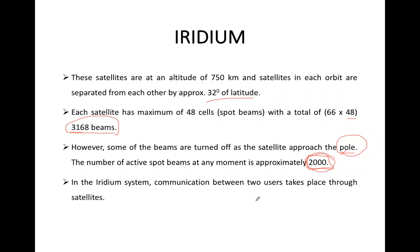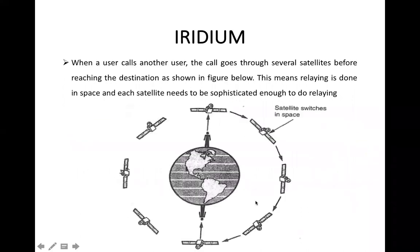In the Iridium system, communication between two users takes place through the satellites, meaning it supports totally wireless communication. Iridium is the first network that is totally wireless — we don't use any base stations in Iridium.